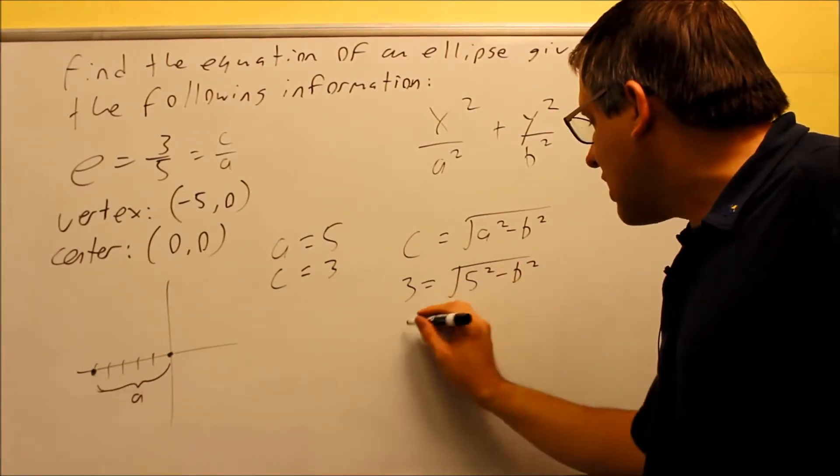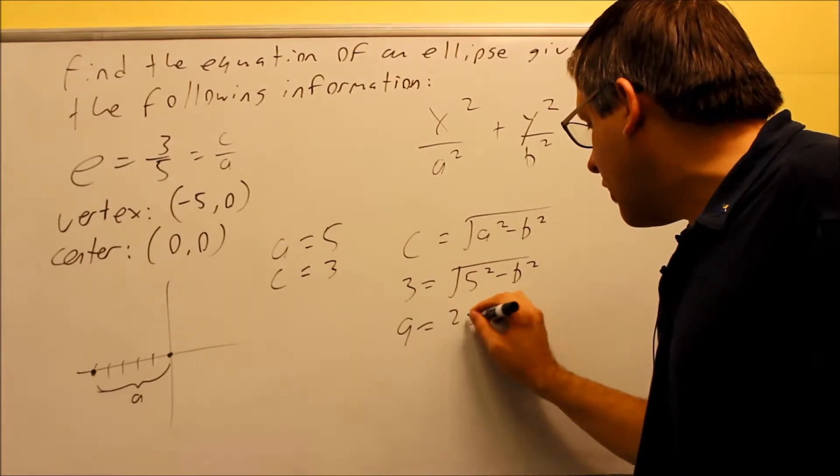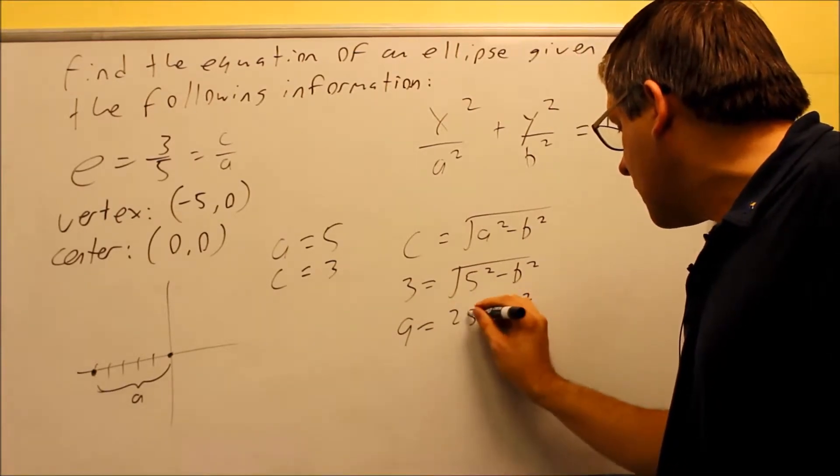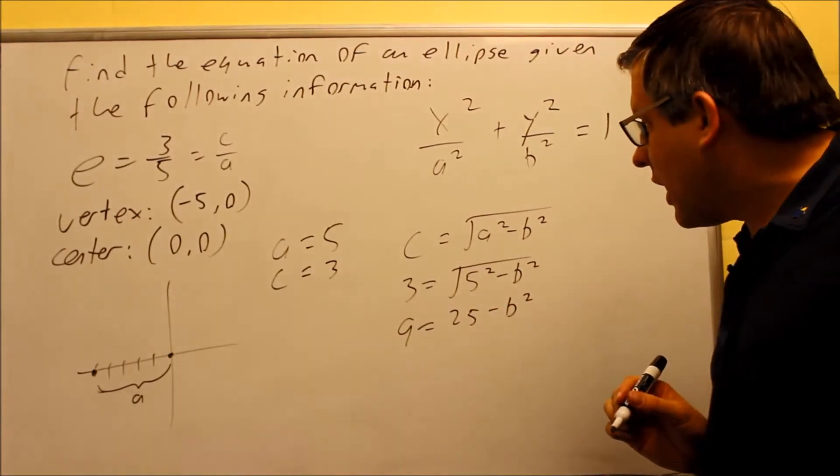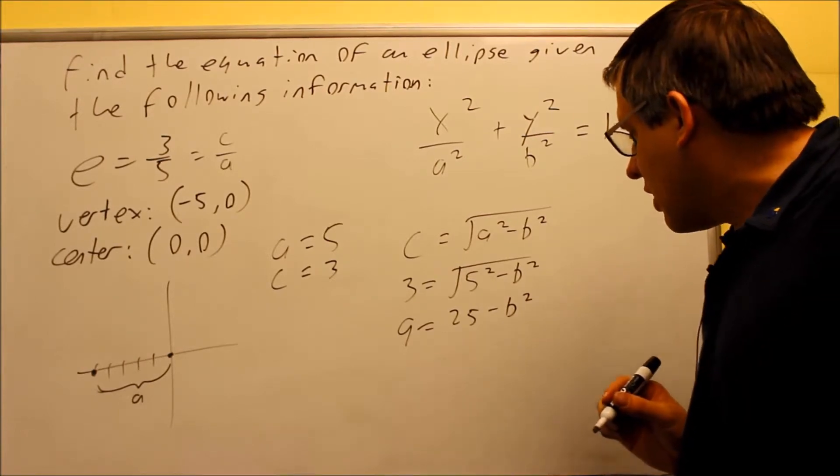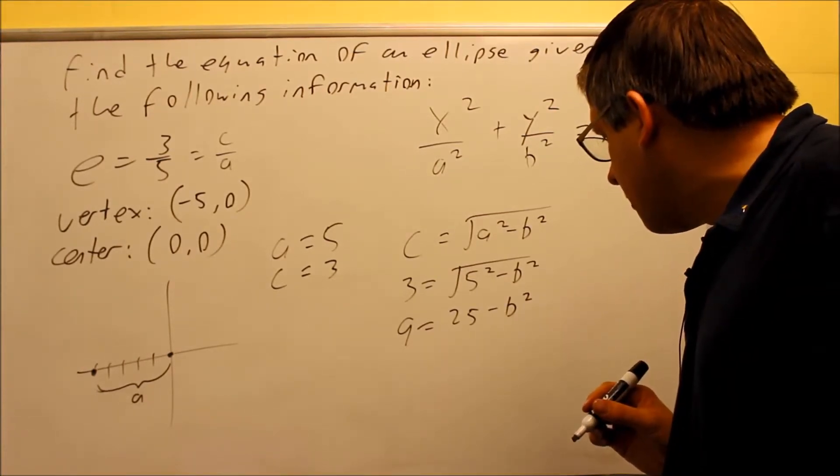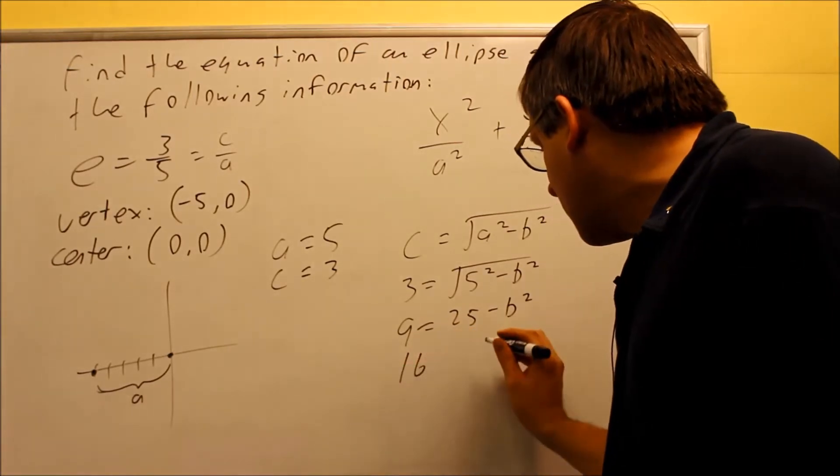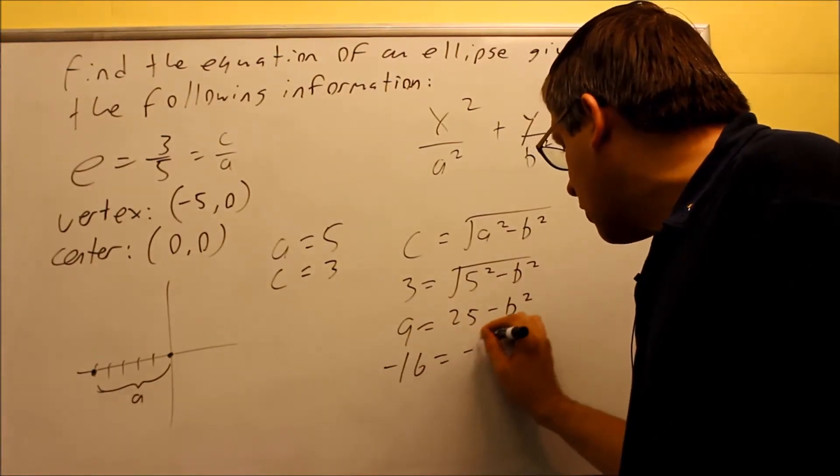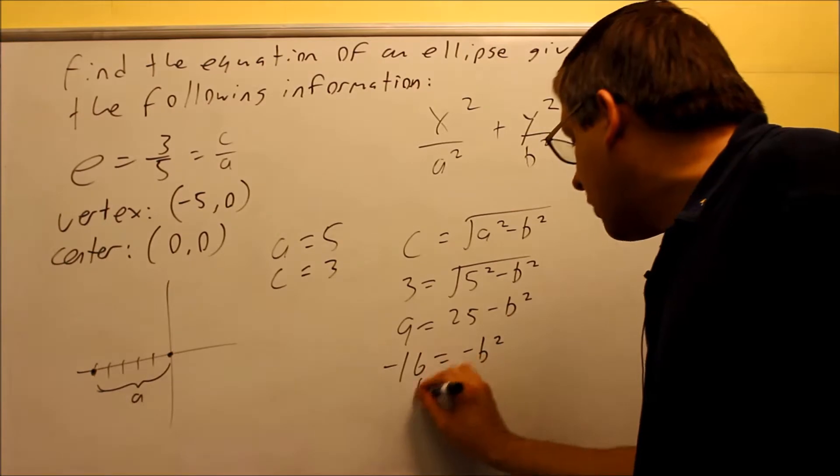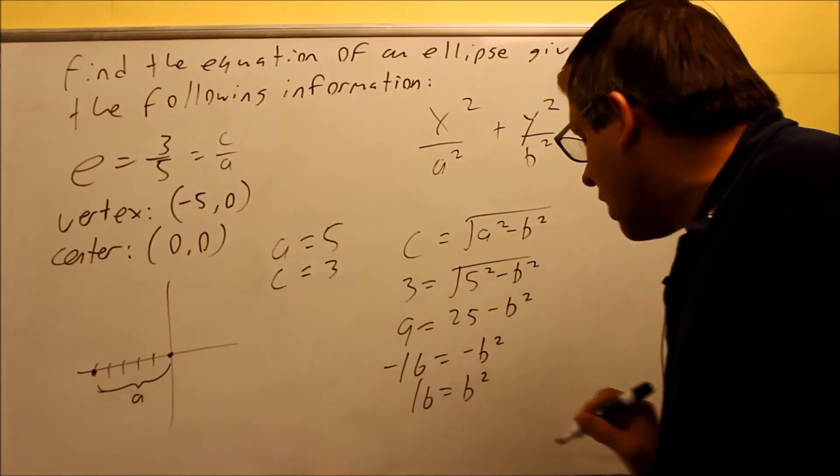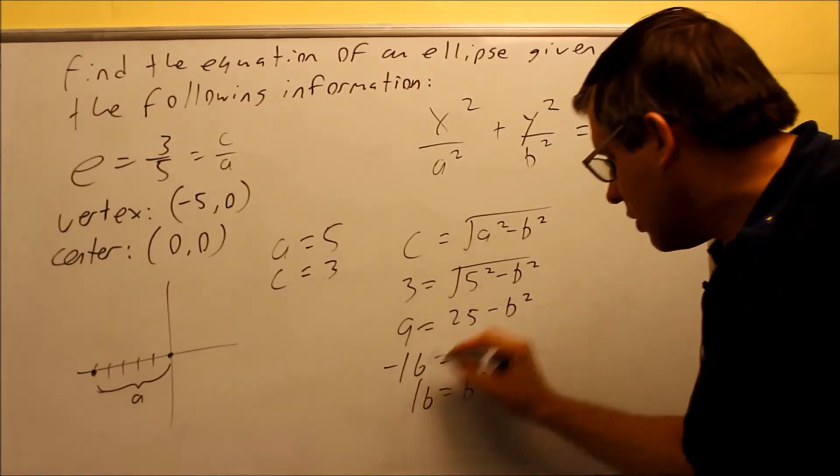Square both sides, I get 9 equals 25 minus b squared. I'm going to subtract the 25 from both sides there. And when we do, we get 16. Negative 16, actually, is equal to negative b squared. And then we get 16 is b squared.